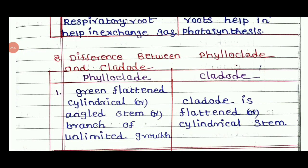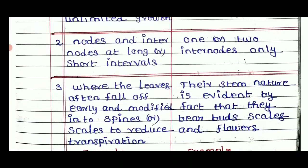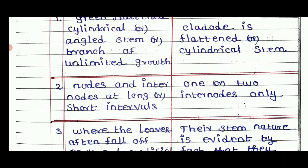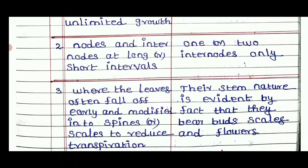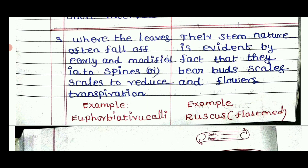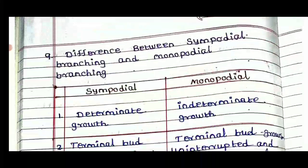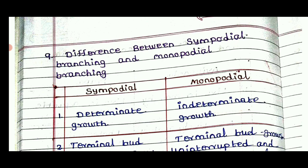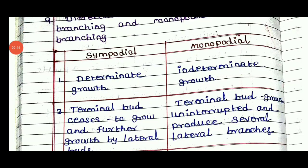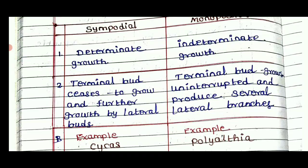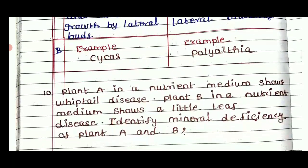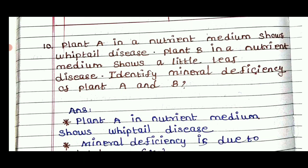The difference between phyllode and phylloclade is very important — this is also a 5-mark question. The difference between sympodial branching and monopodial branching: sympodial branching has determinate growth while monopodial branching has indeterminate growth with terminal buds. Examples: Cycas for sympodial branching and Polyalthia for monopodial branching.